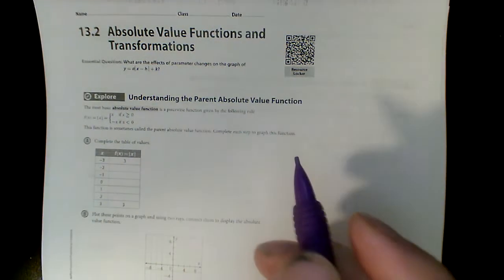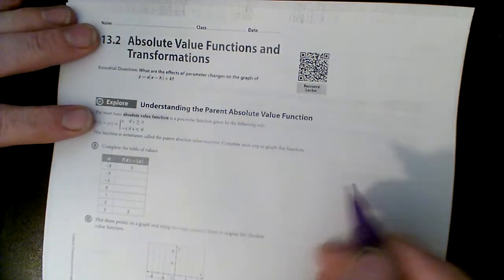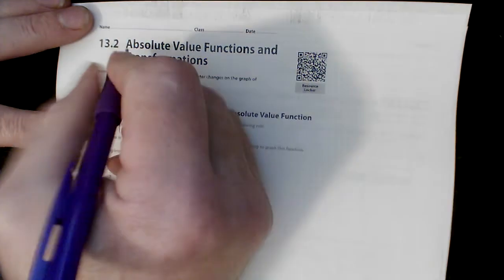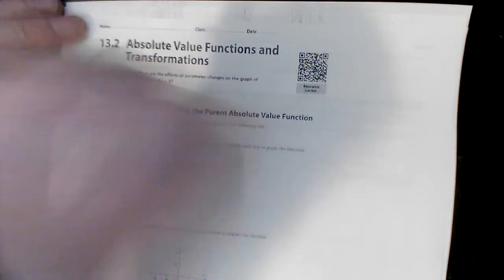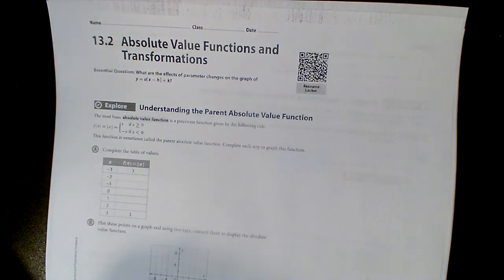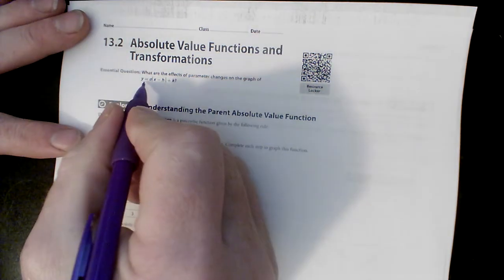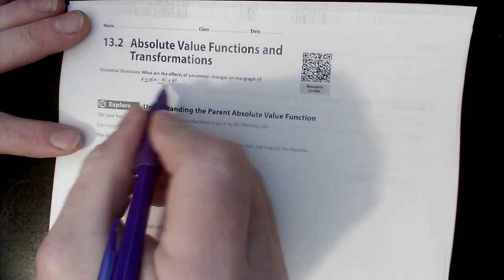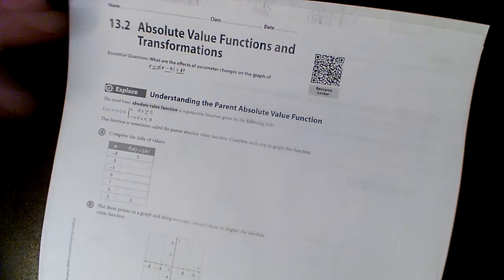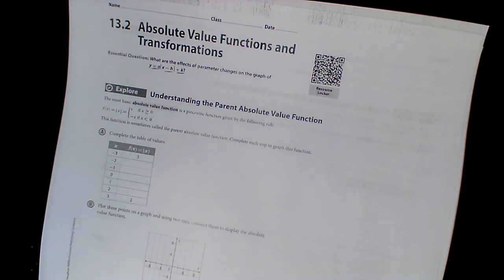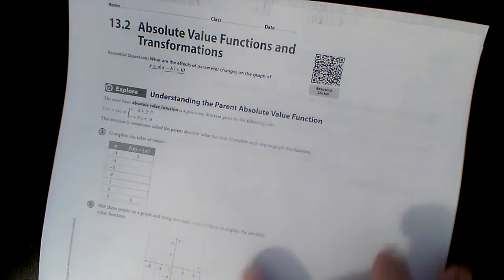We are talking about a different function today, and that function is called an absolute value function. I would like you to notice a few variables in this equation: we have a, h, and k, and those are going to do some things that you're going to see over and over again with different functions.